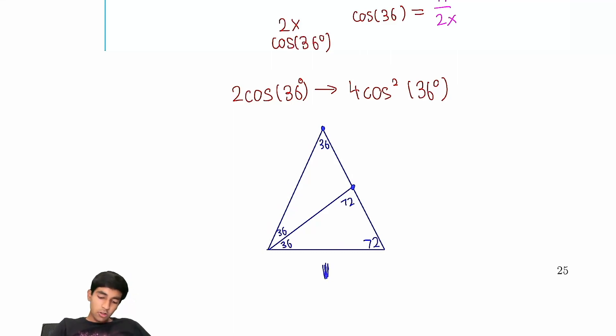You know what, let's actually call, let's call this distance 1. So let's say the ratio of this side to this side is x. Then this would be x.